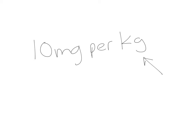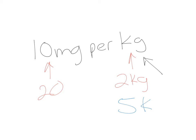Going back to the example of 10 milligrams per kilogram — that means anybody taking this drug can take 10 milligrams for every kilogram they weigh. If they weighed one kilogram, they'd take 10 milligrams. If they weighed two kilograms, they'd take double: 20 milligrams. If a patient weighed five kilograms, they'd take five times the dosage — 50 milligrams. That's what's going to happen with all these medications.